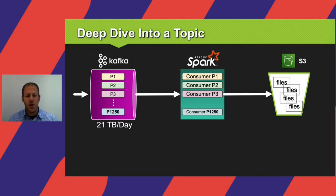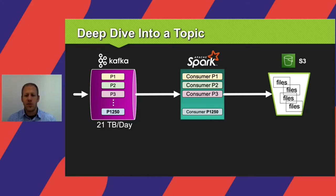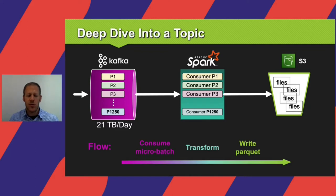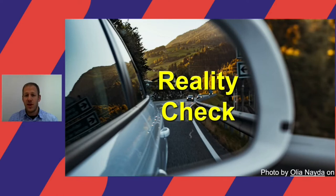In order to consume such an amount of data, we defined this Kafka topic to run with 1,250 partitions. The way the Spark cluster works is that each Kafka consumer runs on top of a Spark executor using its own core. So overall we are running 1,250 cores all running together, with the same number of files being written to S3. Every few minutes, we consume a micro-batch from Kafka, run some transformations, and the results are written to S3 as parquet files. It works perfectly for us. But in time, reality sets in and we found some issues with this system.